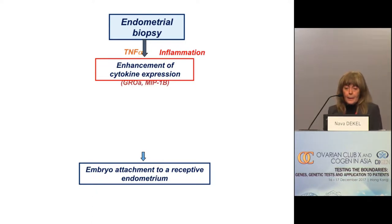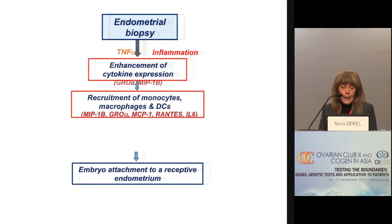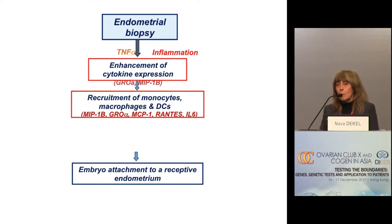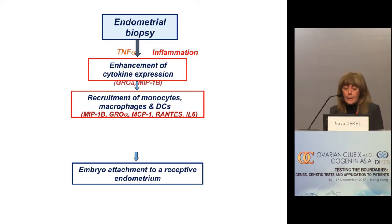I won't go into details of each publication but will summarize our conclusion. We came up with a model suggesting that endometrial biopsy induces a local inflammatory response. The major component of this inflammatory response is TNF-alpha, and other cytokines secreted upon endometrial biopsy are GRO-alpha and MIP-1a/b. These molecules recruit the immune system — mainly monocytes — to the site of injury, where they mature and differentiate into macrophages and dendritic cells.